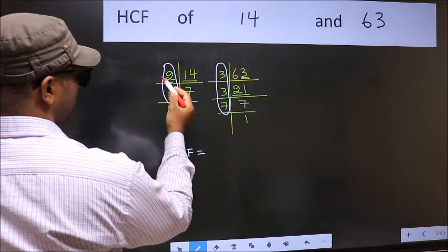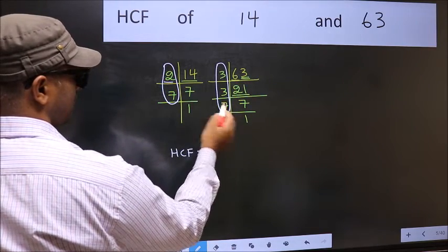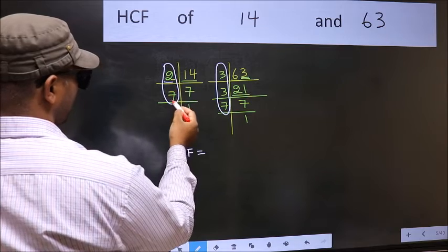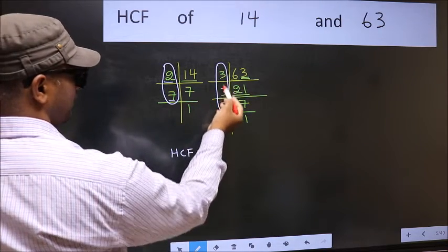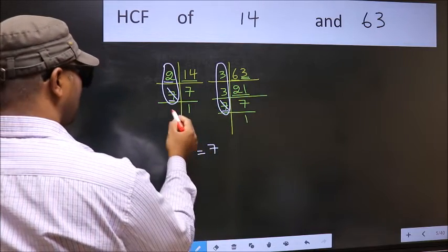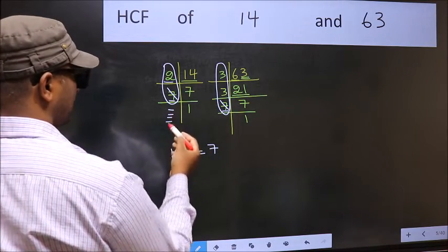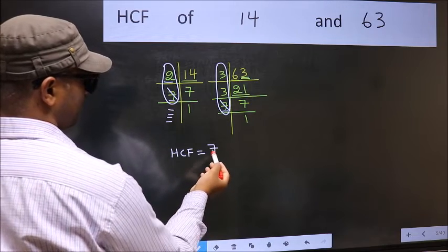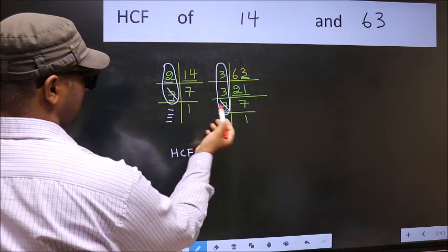Starting with the number 2. Do we have 2 here? No. Next number 7. Do we have 7 here? Yes. So mark 7 right here. No more numbers have been left out. So we got only one number, 7, present in both places. So 7 itself is our HCF.